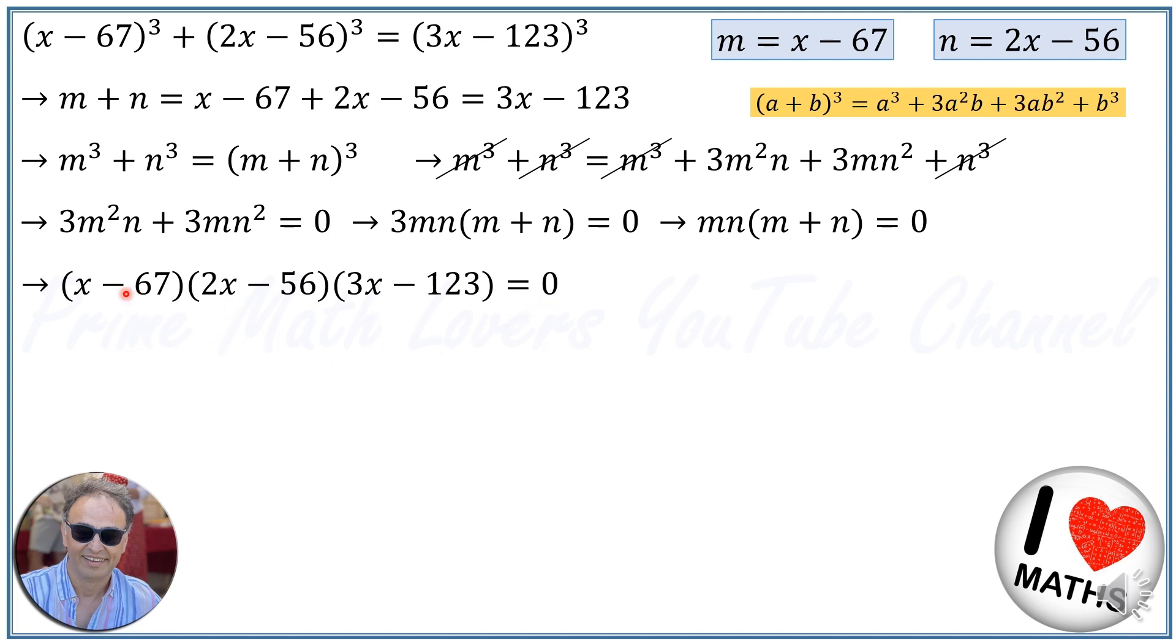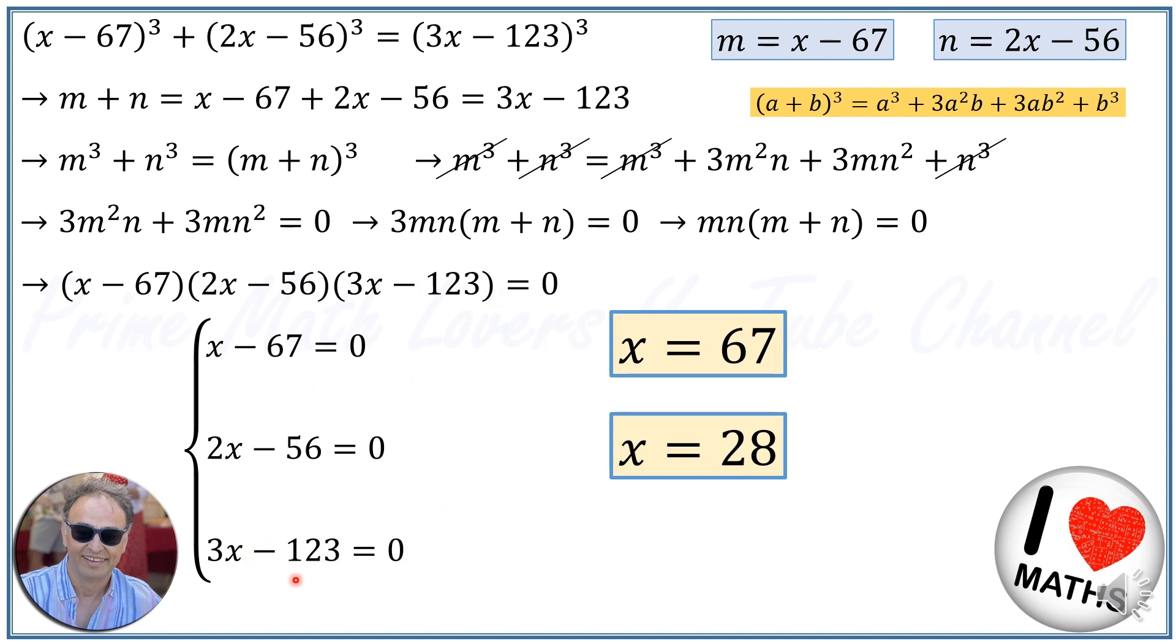It means we should put each of the terms equal to 0 and calculate the x. So if we put x minus 67 is equal to 0, then x is equal to 67. For 2x minus 56 is equal to 0, x will be 56 divided by 2, which is 28. And for 3x minus 123, x will be 123 divided by 3, which will be 41.